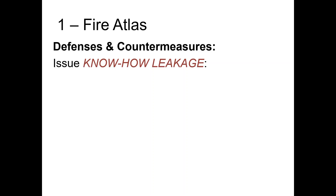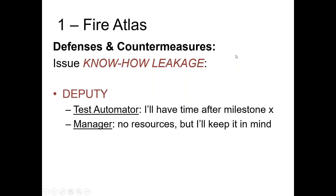Of course there are defenses. If you go in the wiki, you'll find an issue called 'know-how leakage,' and it suggests quite a few patterns. The most important is 'deputy' — for all people with important knowledge, you put a deputy who can also do it, so if they're on vacation, sick, or leave the company, you're not stuck. The test automator's countermeasure: say 'I will teach somebody what I know, but I'll have time only after milestone X.' And of course, after milestone X there's another milestone and then another, so you never really have time. The manager says, 'Right now there's no resources, but I'll keep it in mind.'